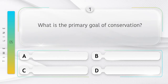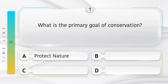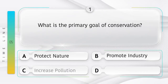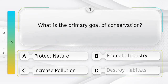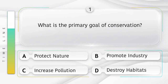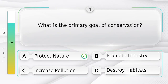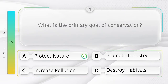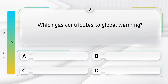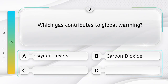What is the primary goal of conservation? Option A: protect nature. Option B: promote industry. Option C: increase pollution. Option D: destroy habitats. Answer is option A: protect nature.